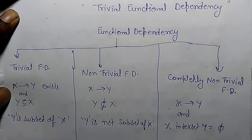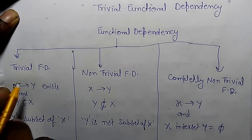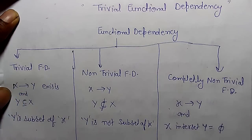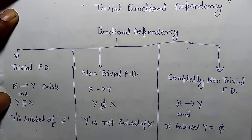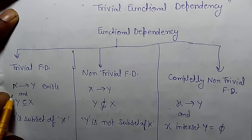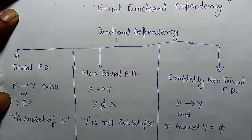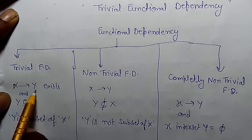Today we are going to learn trivial functional dependency. There are three types of functional dependency: trivial functional dependency, non-trivial functional dependency, and completely non-trivial functional dependency. Say if there is a functional determination where X functionally determines Y.